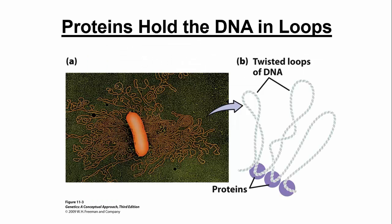When we talk about bacterial DNA, it is packaged. This slide shows a single bacterium, and if you opened up all the DNA and stretched it out, look how large a surface area it covers — it wouldn't really fit inside the bacterium. But all of this is supercoiled and compact, interacting with different bacterial proteins to stabilize and compact the DNA so it can fit inside.